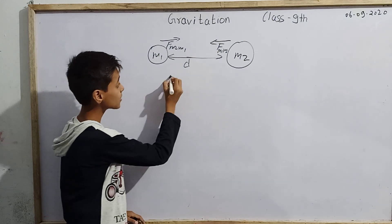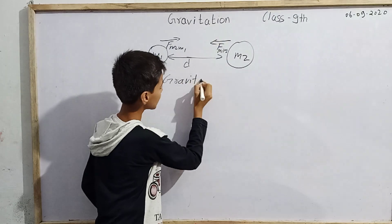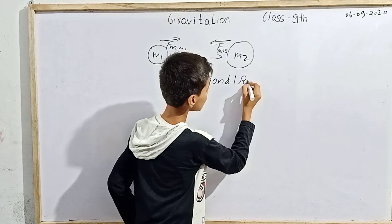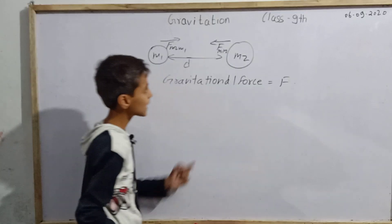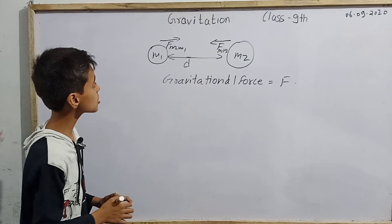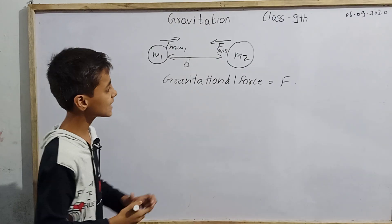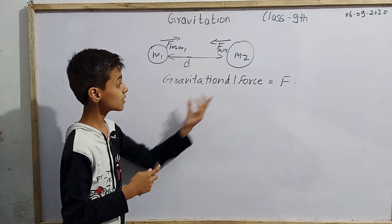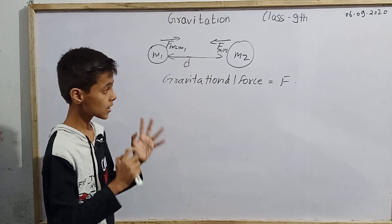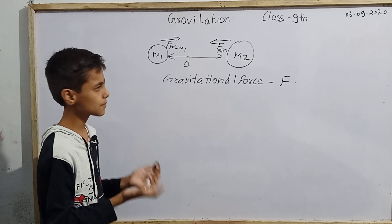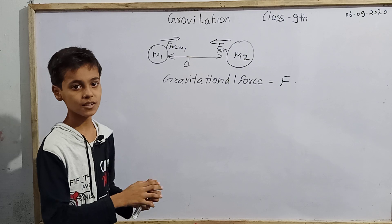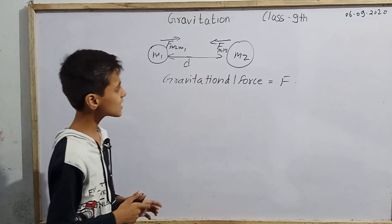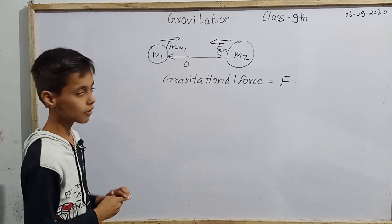We can define gravitational force: the magnitude f by which those two objects attract each other is our gravitational force. Gravitational force is a kind of force that causes attraction between any two objects in the universe. Every object in the universe attracts another object by a force called gravitational force.